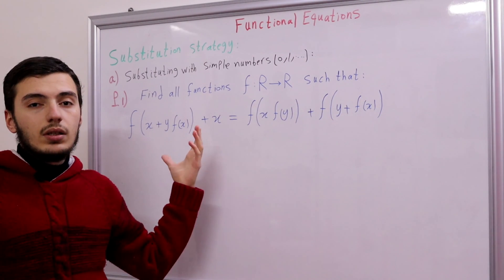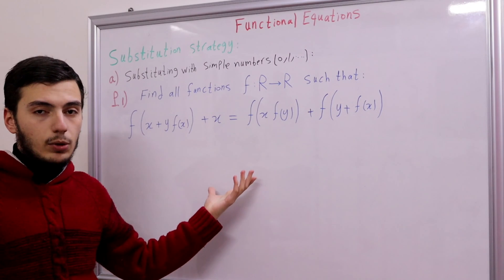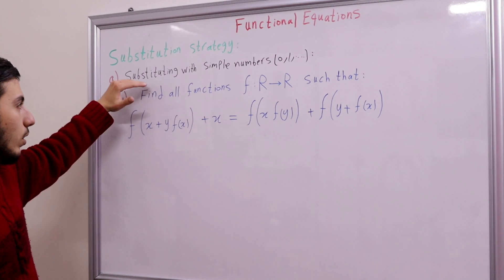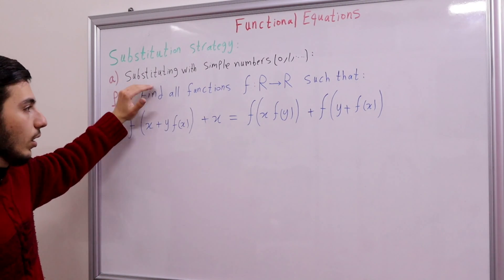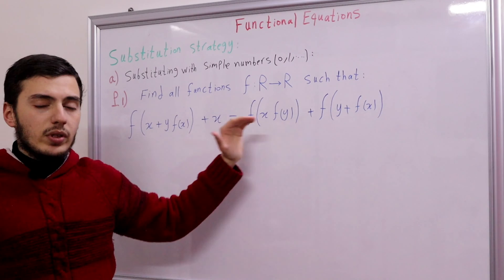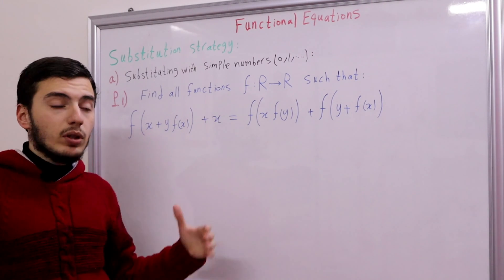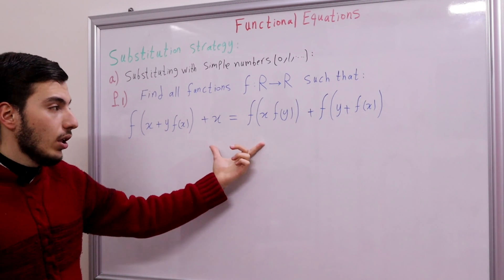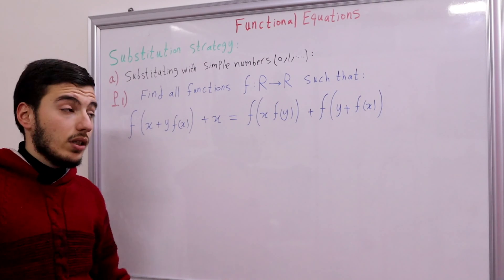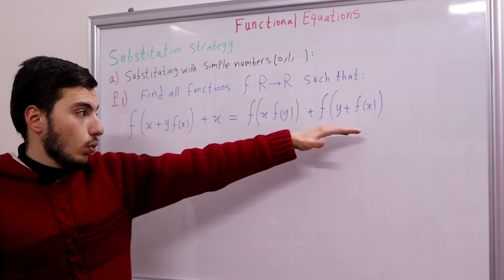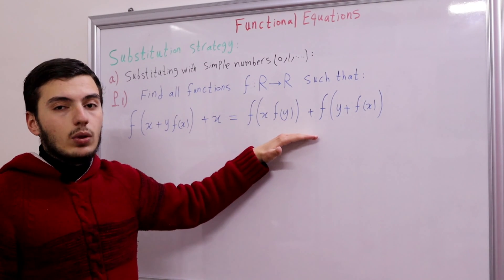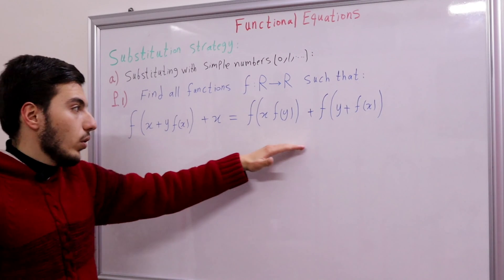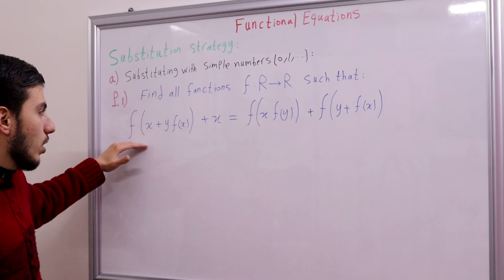It looks complicated, but that's exactly why we start substituting — when we substitute we can simplify our equation. The second objective is to evaluate some specific values, for example f(0) or f(1). So let's start substituting.